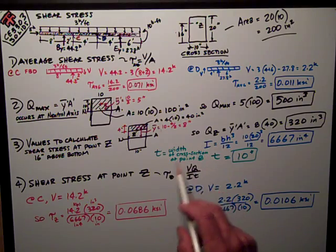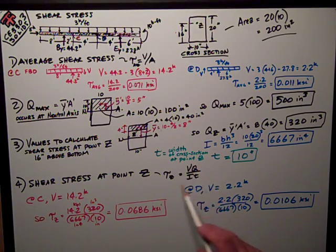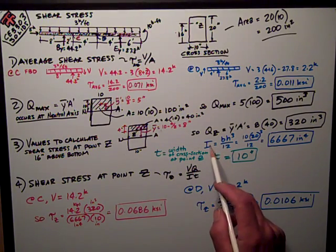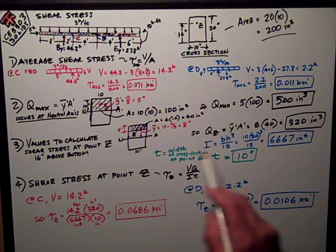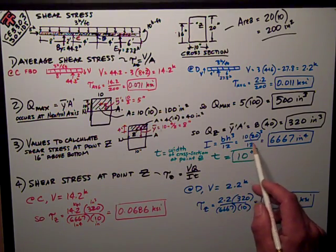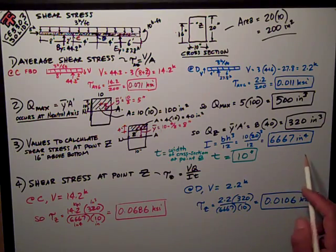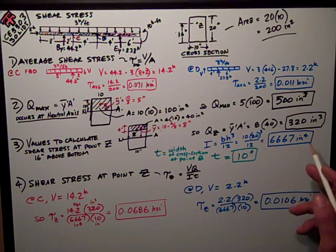We need to know moment of inertia. We're going for this formula down here, VQ over IT, of course. So the moment of inertia of a rectangle is bh cubed over 12. There's the numbers. It works out to be 6667 inches to the fourth.